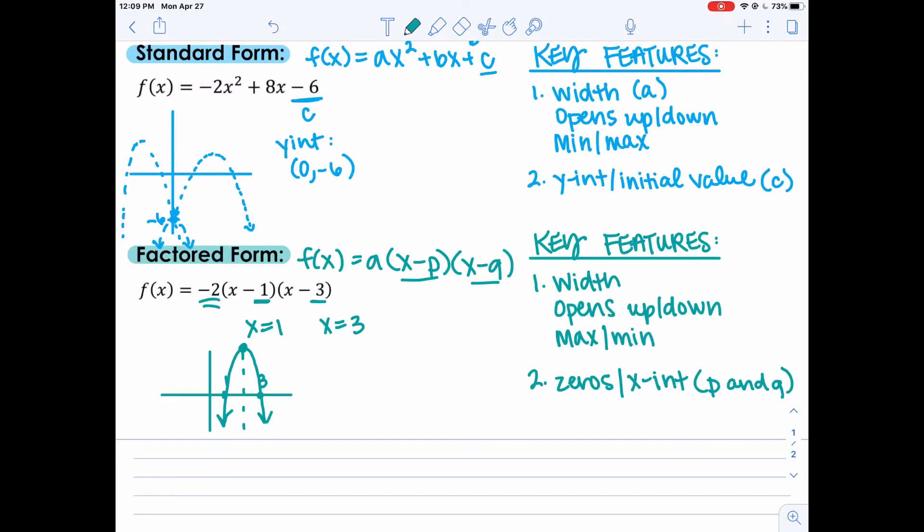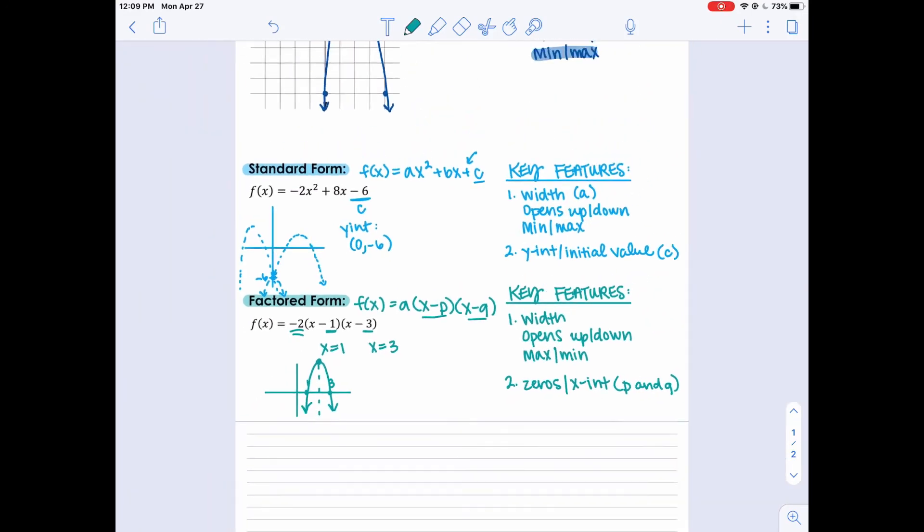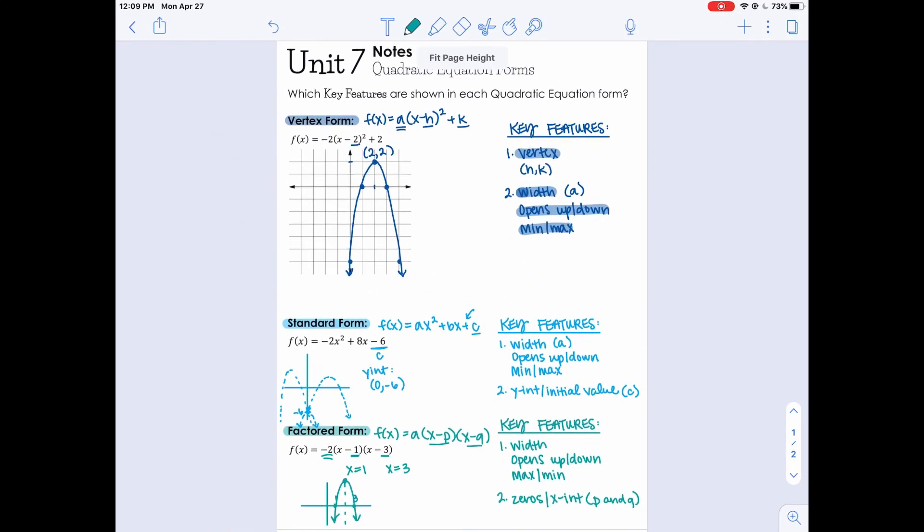So each of these has their own useful information. We use them for all different types of ways. We even convert from one form to another based on what we need. If I need to know the zeros, then I'll convert it to factored form. If I need to know the vertex, then I'll change it to vertex form. So that's what's going to be coming up. But first, let's make sure we have this list of each of these key features so you can easily tell which one that you're going to need to use. That is all for today. If you have any questions, shoot us an email. Thanks a ton for watching.